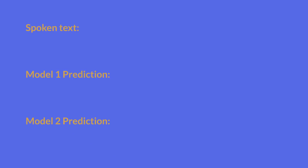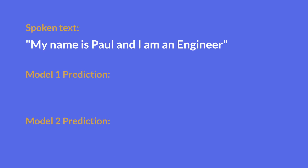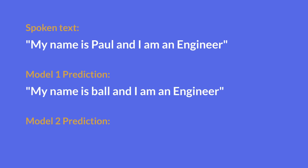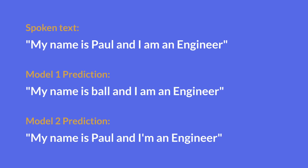In these benchmark reports we use the word error rate metric to compare different models, but WER, even though it's a very useful single-number metric, has some shortcomings. For example, if what was spoken was "my name is Paul and I am an engineer," Model 1 predicts "my name is Ball and I am an engineer" while Model 2 predicts "my name is Paul and I'm an engineer." Model 1 gets a WER of 11.11% and Model 2 gets 22.22%. Even though Model 2 predicts a more accurate result, Model 1 gets a lower error rate because WER does not care about context — it only focuses on the number of mistakes made.